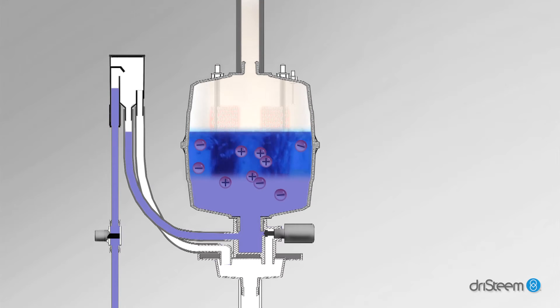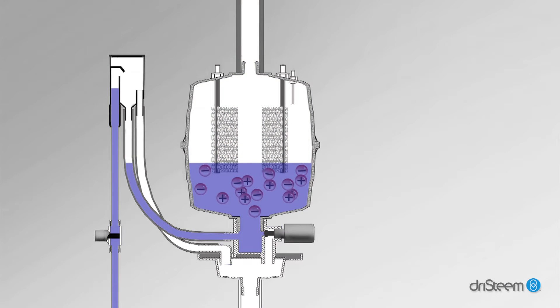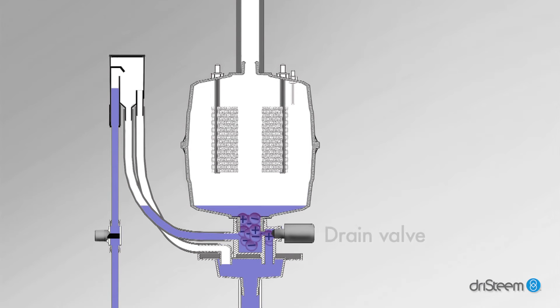As water boils away, the concentration of conductive ions in the water increases, which increases electrical current through the water. At some point, the controller must reduce water conductivity by opening the drain valve and flushing the overly conductive water, then replacing it with fresh fill water.